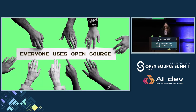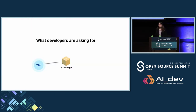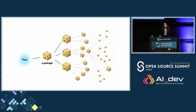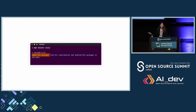I will state the obvious and say that everyone uses open source. A developer wants to deliver faster — why write the same code twice that someone else wrote before? When you go to install a package, this is what's usually happening: that package has more dependencies, and this is a more realistic diagram of what happens in real life. For example, when I'm trying to install cnc.js, what actually happens is that more than 800 packages are added automatically as dependencies.